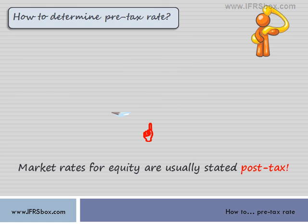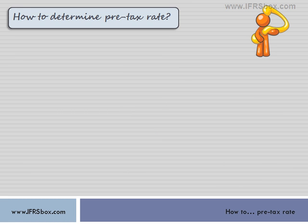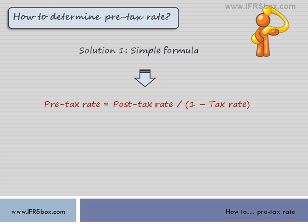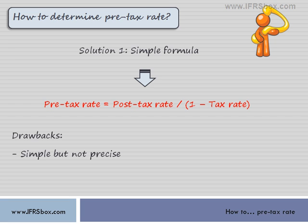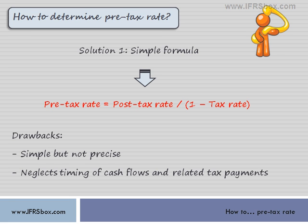So what to do with it? Your rates are post-tax and all you need is pre-tax. There are two possible solutions to that problem. The first is to use a simple grossing up formula just like this one. You simply take the asset's or cash generating unit's standard tax rate and gross your market rate of return by that tax rate. However, it's not ideal for every case — it is very simple but not precise at all. It should not be used in every situation, mainly because it fully neglects the timing of cash flows and related tax payments.